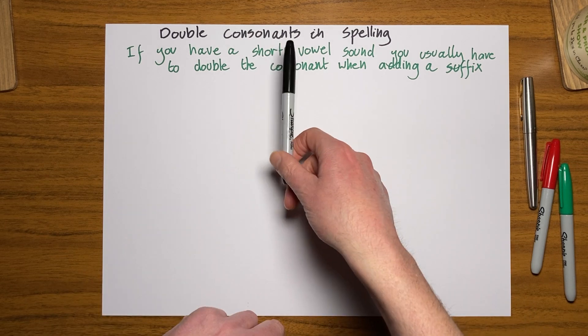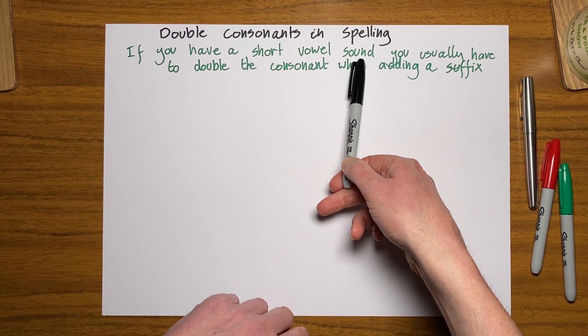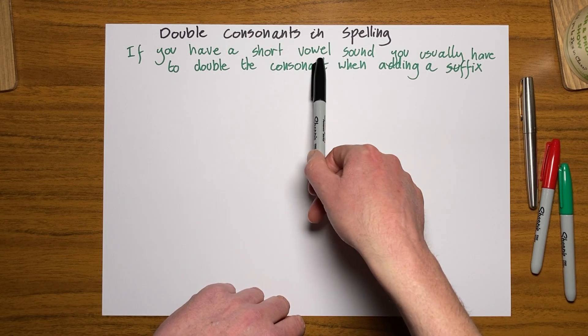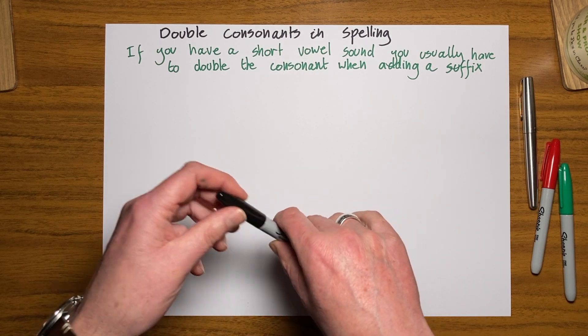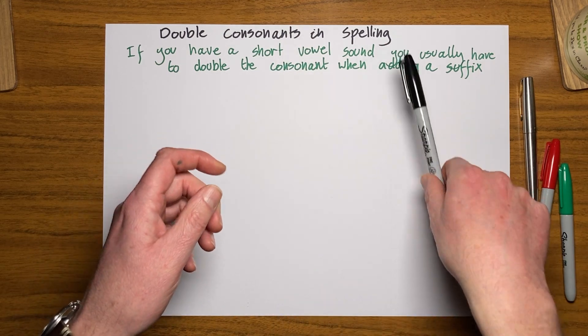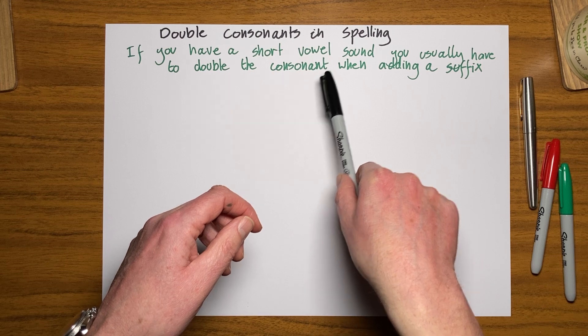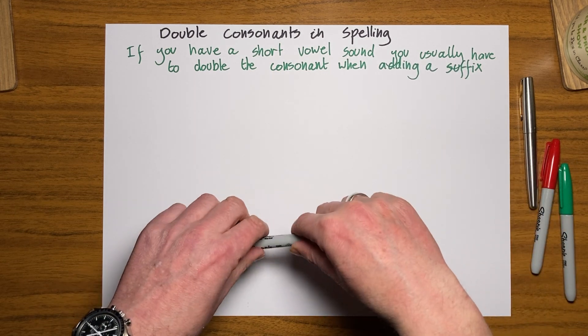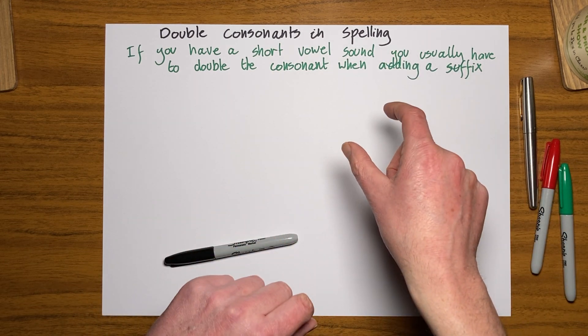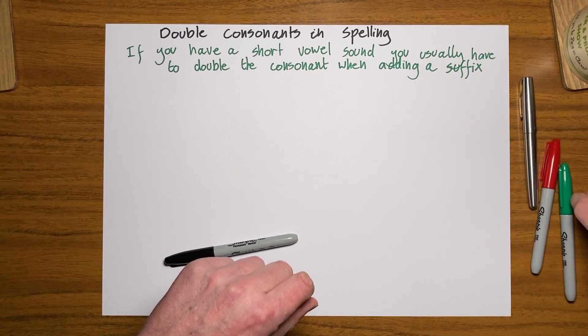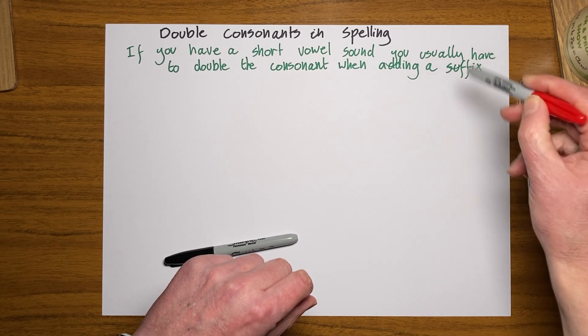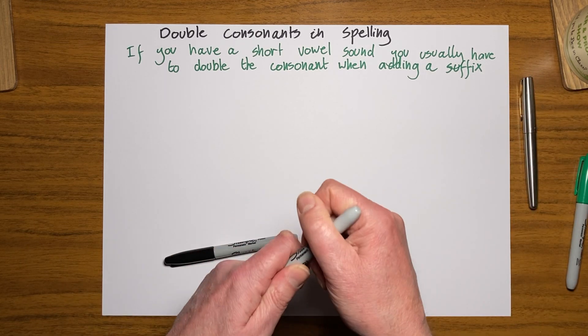What this means is if you have a short vowel sound, and if you're not sure what a short vowel sound is, have a look at the video I've done which explains that. You usually have to double the consonant when adding a suffix. And remember that a suffix is a group of letters that goes at the end of a word. Again, look at my other videos on suffixes.